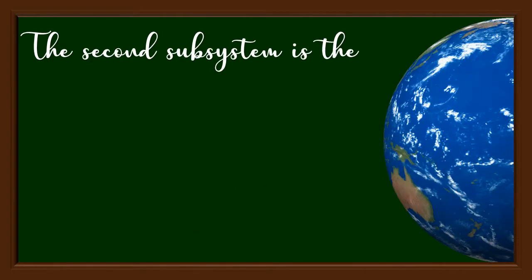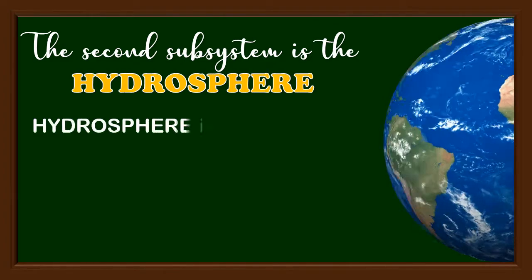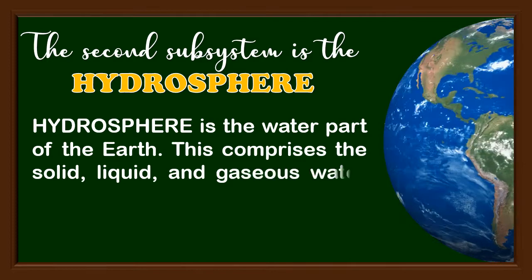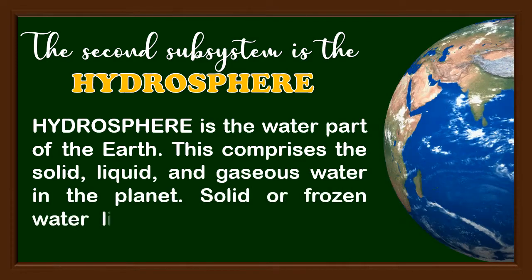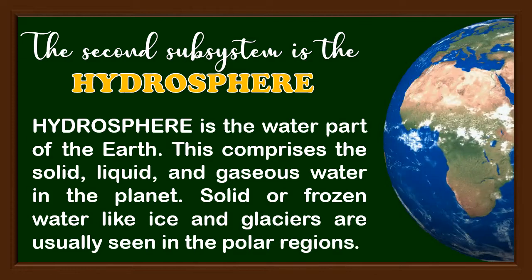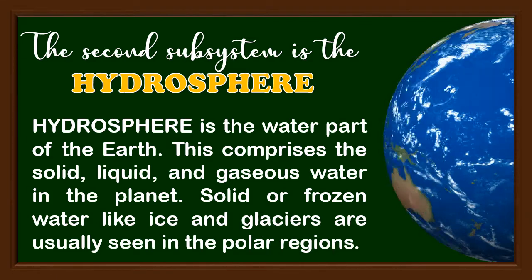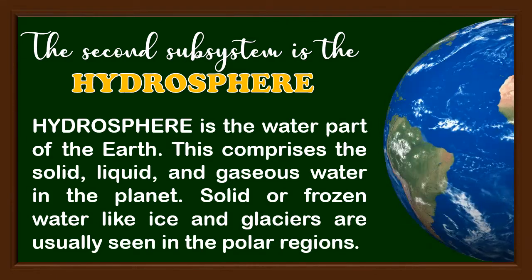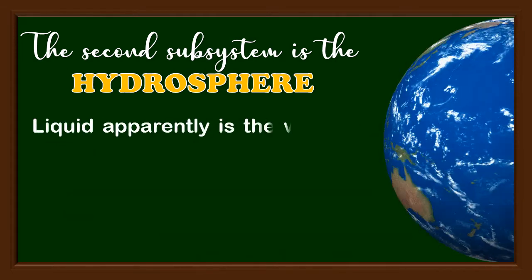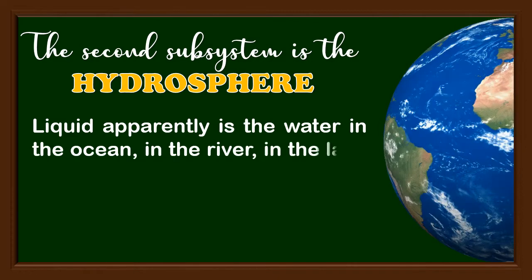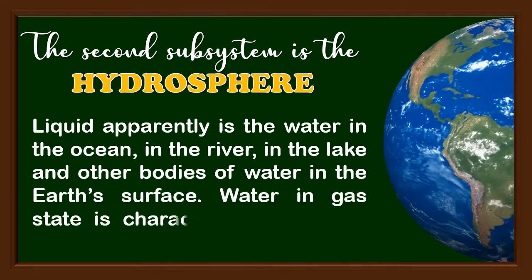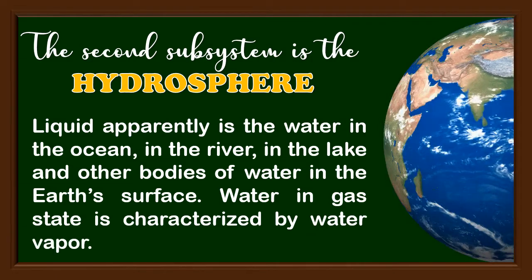The second subsystem is the hydrosphere. The hydrosphere is the water part of the Earth. This comprises the solid, liquid, and gaseous water in the planet. Solid or frozen water like ice and glaciers are usually seen in the polar regions. Liquid water is found in the ocean, in rivers, in lakes, and other bodies of water on the Earth's surface. Water in gas state is characterized by water vapor.